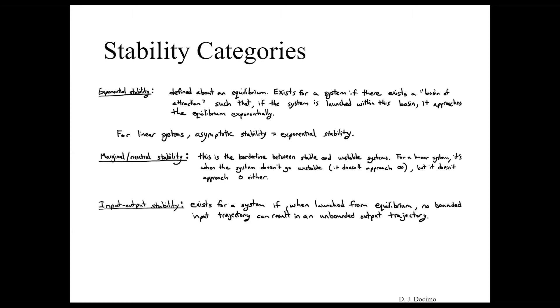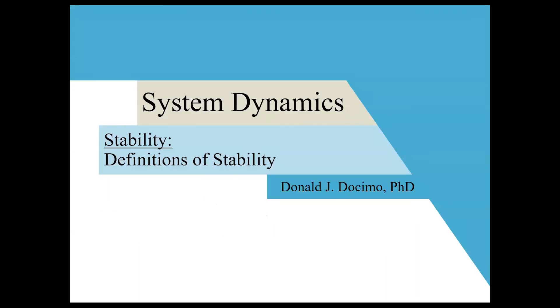And then finally, our last category of stability is our input-output, or input-output stability. This exists for a system if, when launched again from an equilibrium, no bounded input trajectory can result in an unbounded output trajectory. Sometimes this could be also referred to as bounded input, bounded output, or BIBO stability. And those are the core definitions of stability.